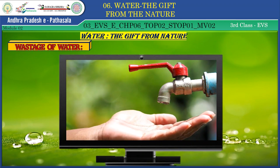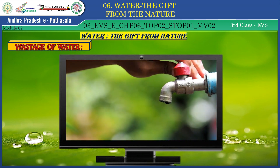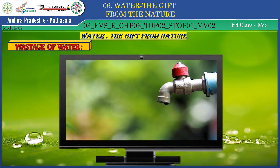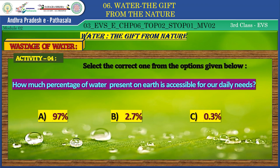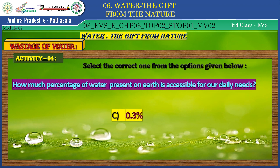A question is waiting for you. Select the correct option: how much percentage of water present on earth is accessible for our daily needs? Option A: 97%, Option B: 2.7%, Option C: 0.3%. Congratulations! You chose the right option — Option C, 0.3%, is the correct answer.